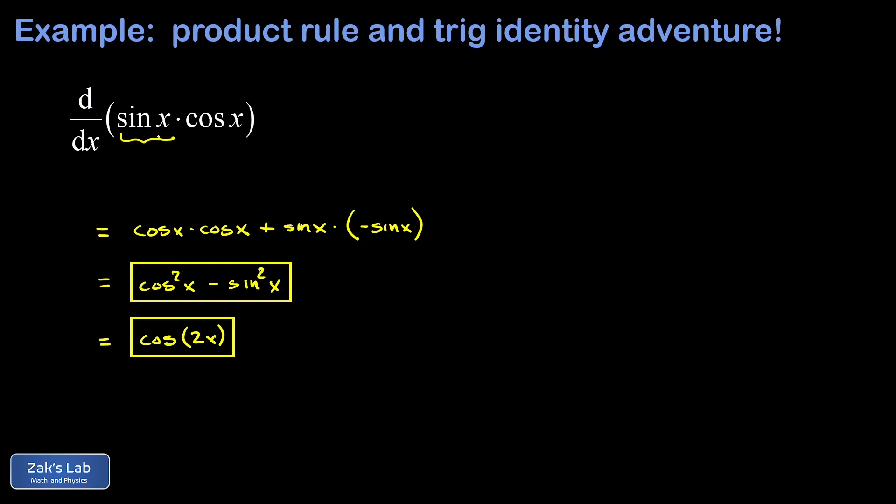So instead of thinking about the derivative of sine x times cosine x I realized that sine x times cosine x is very close to a trig identity itself and what I'm thinking about here is the fact that the sine of 2x that's 2 times sine x cosine x. Okay so that means sine x cosine x could be written as half the sine of 2x.